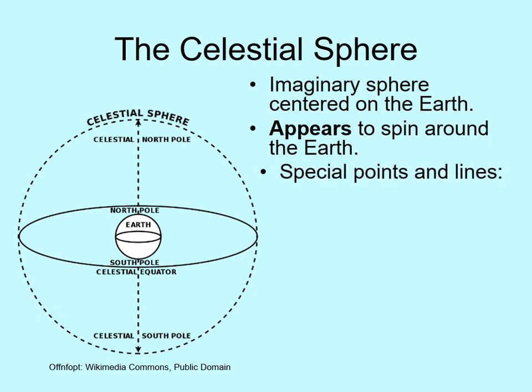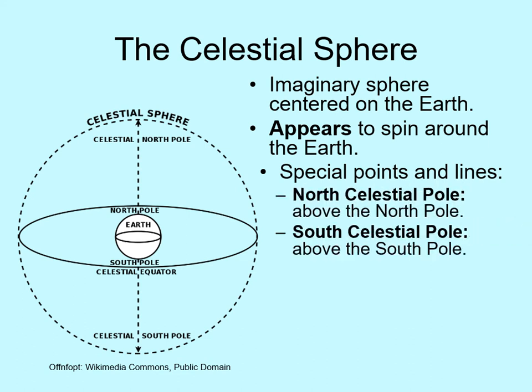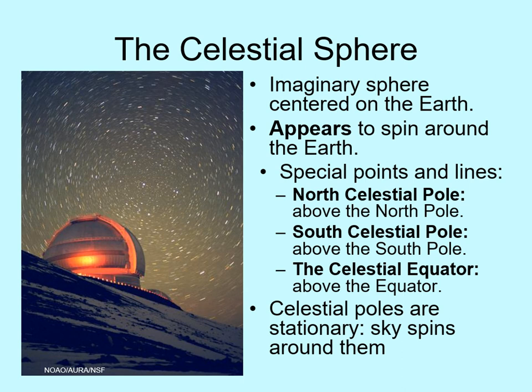On any spinning ball there are a few special locations: the poles and the equator. The poles are the stationary points the ball spins around, while the equator is the line halfway between those poles. That defines the north and south poles and equator of the Earth. Since we're pretending the celestial sphere is spinning around us, the celestial sphere must have north and south celestial poles as well as a celestial equator — just an extension of the Earth's poles out into space.